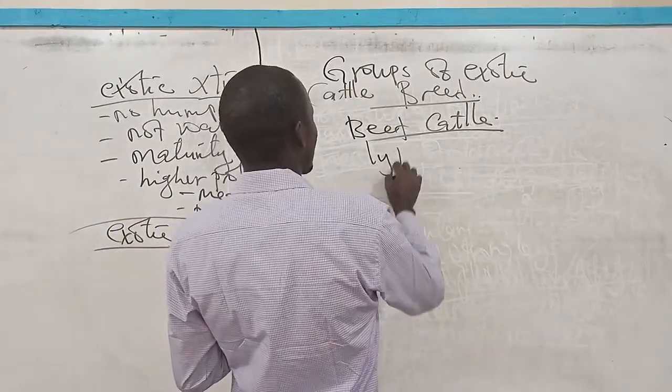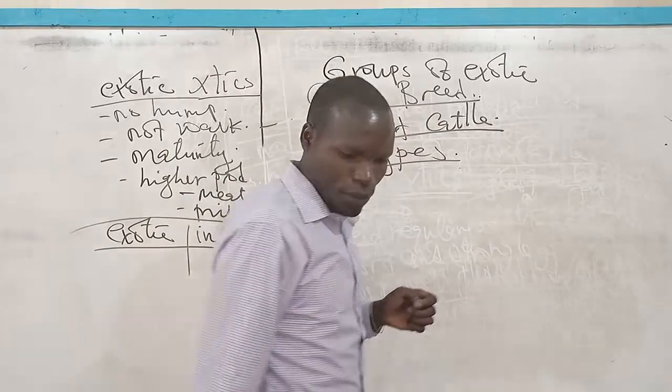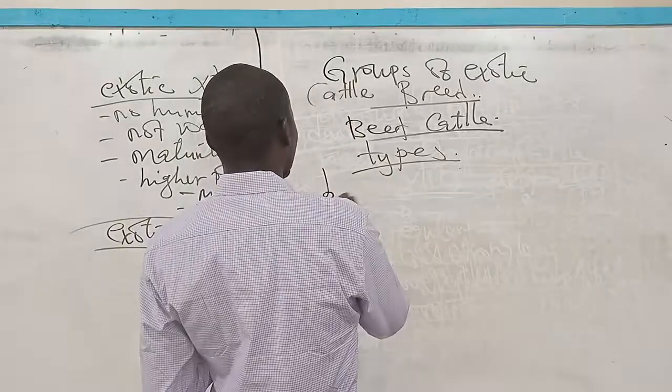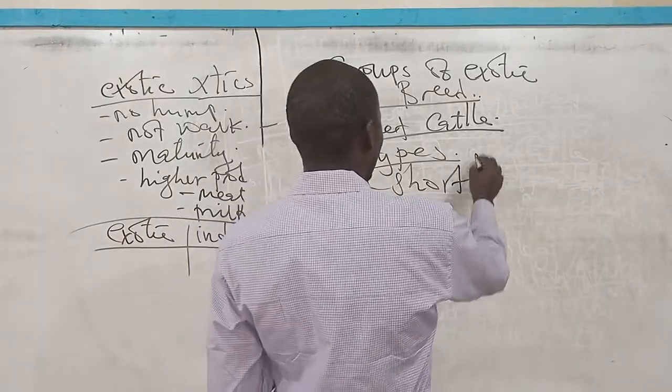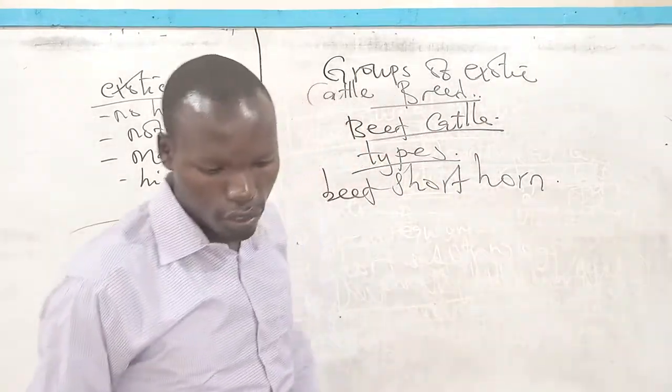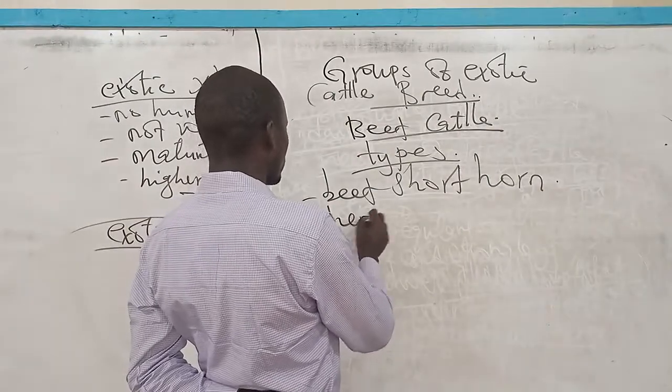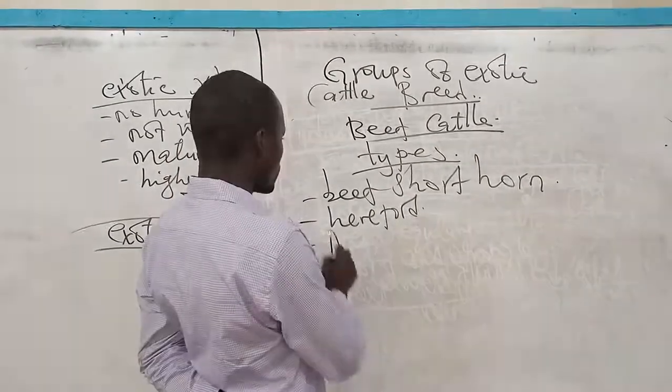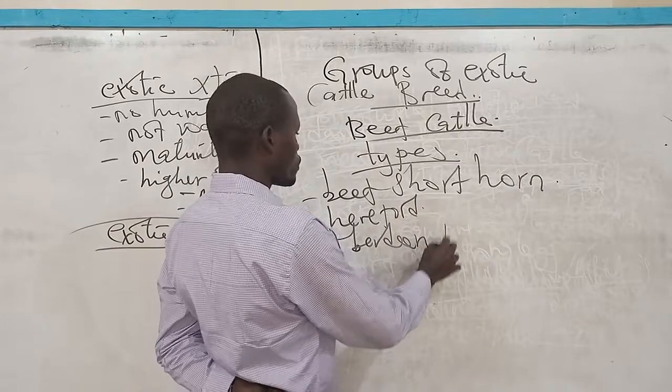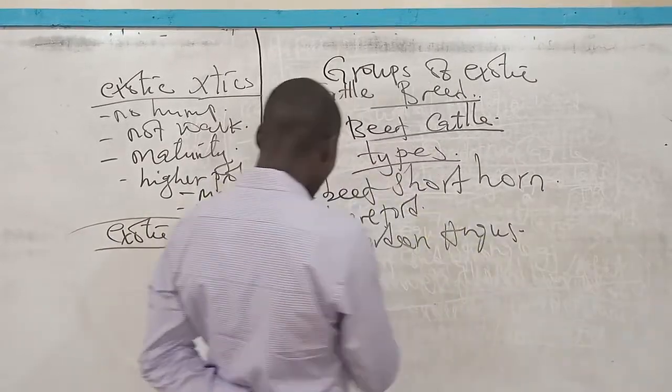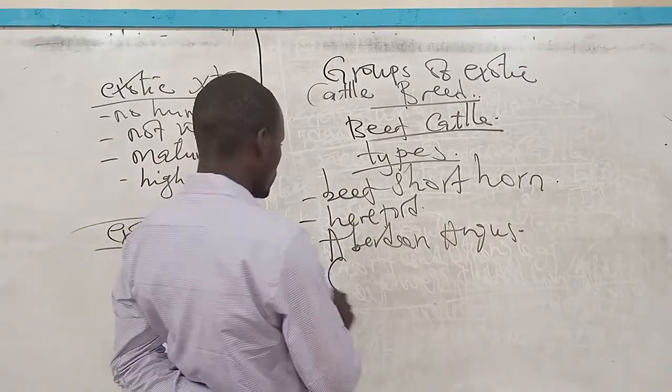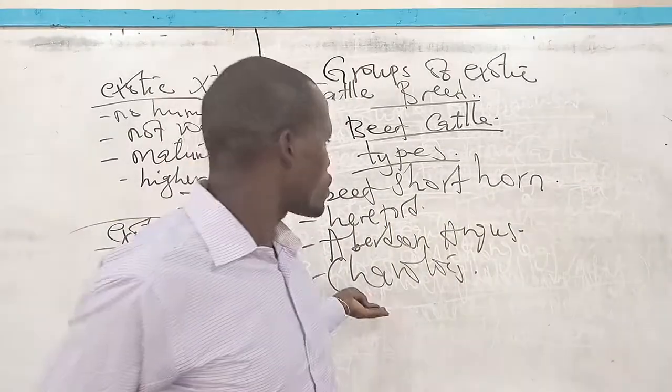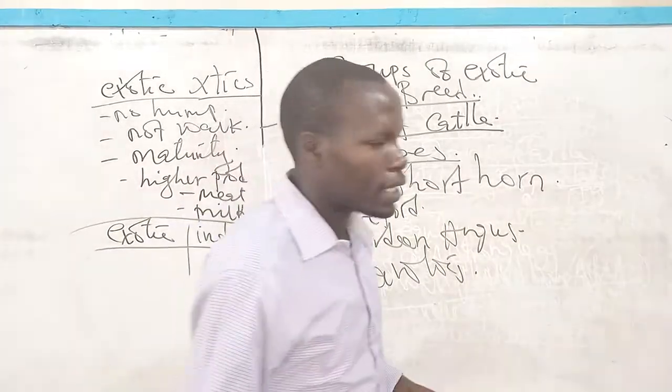They have a lot of fat. And that's why they have a lot of fat. Now we look at the various types or else the examples of these cattle. The various types of the beef cattle. We have a breed, for instance, the Beef Shorthorn. We have the Hereford. We have the Angus. These are some of the breeds of the beef cattle among others.